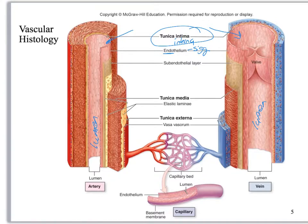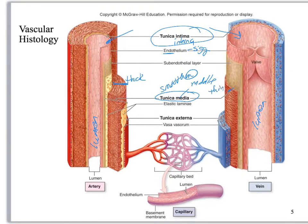The middlemost layer is called the tunica media — media for middle. This consists of smooth muscle, and you can see it here. What you should notice is that on the artery it's thick, and on the vein it's really thin. Also notice the elastic lamina on the artery — there's none on the vein. Elastic lamina and the thickness of the tunica media are features of arteries.